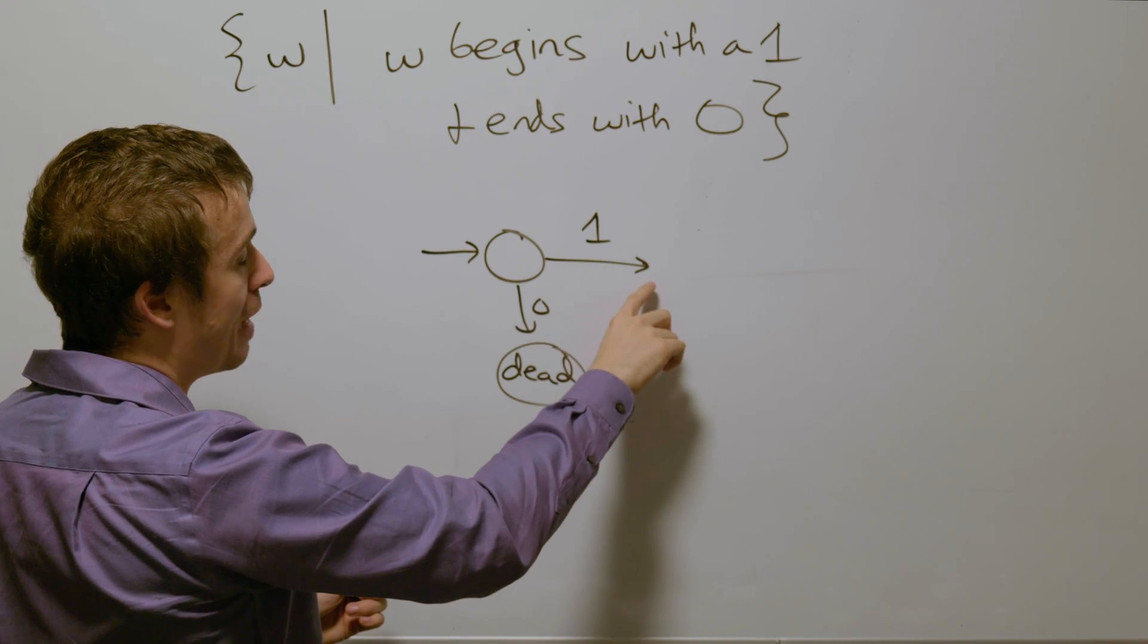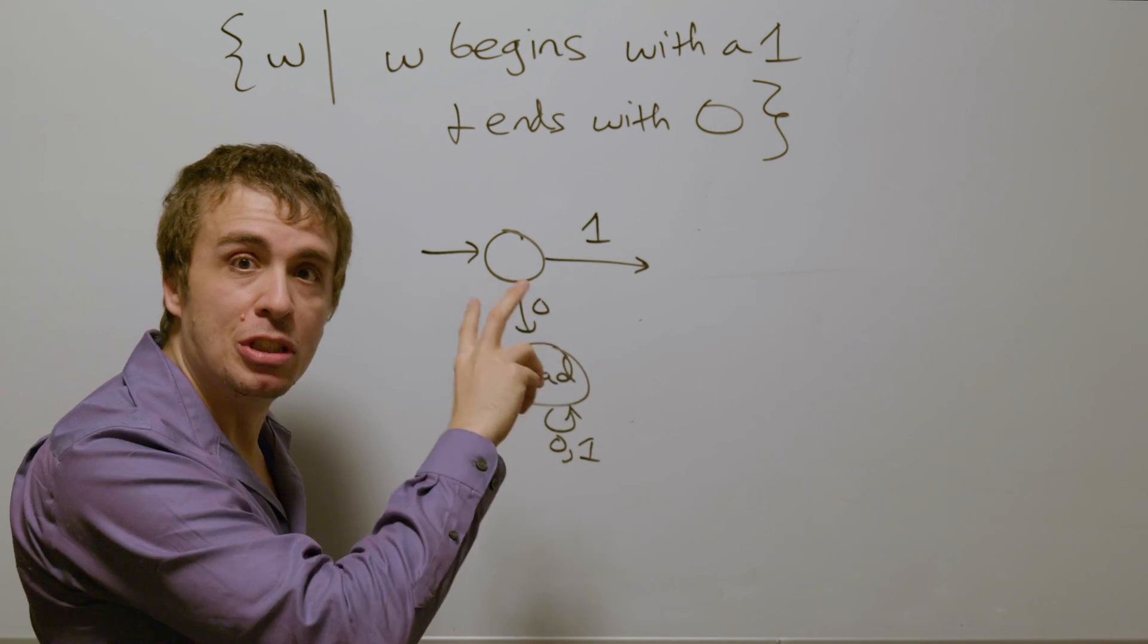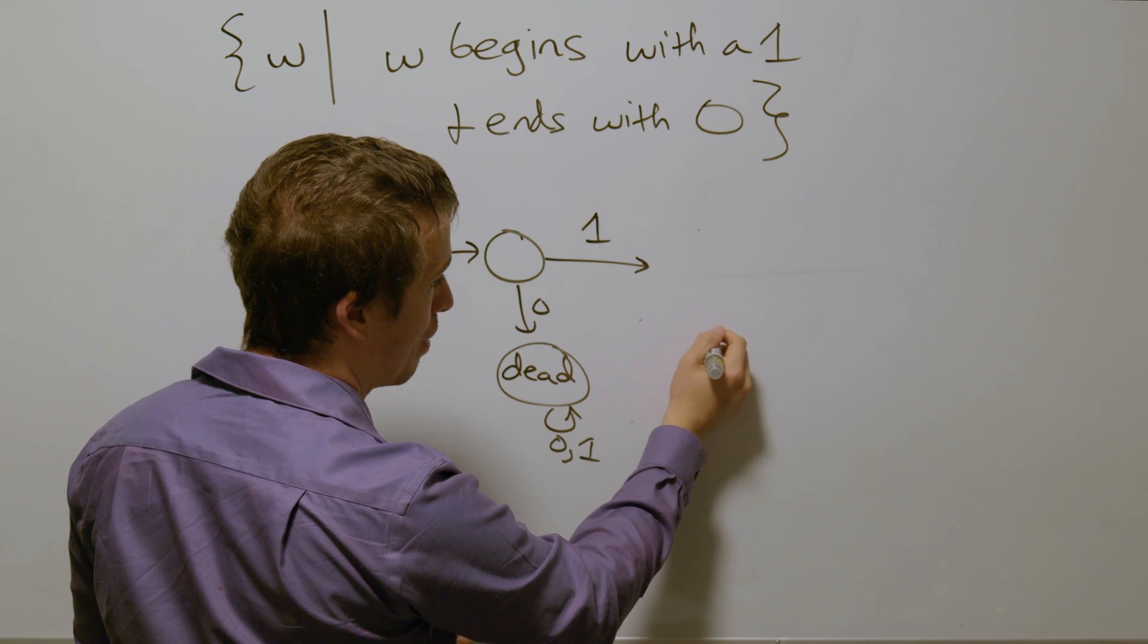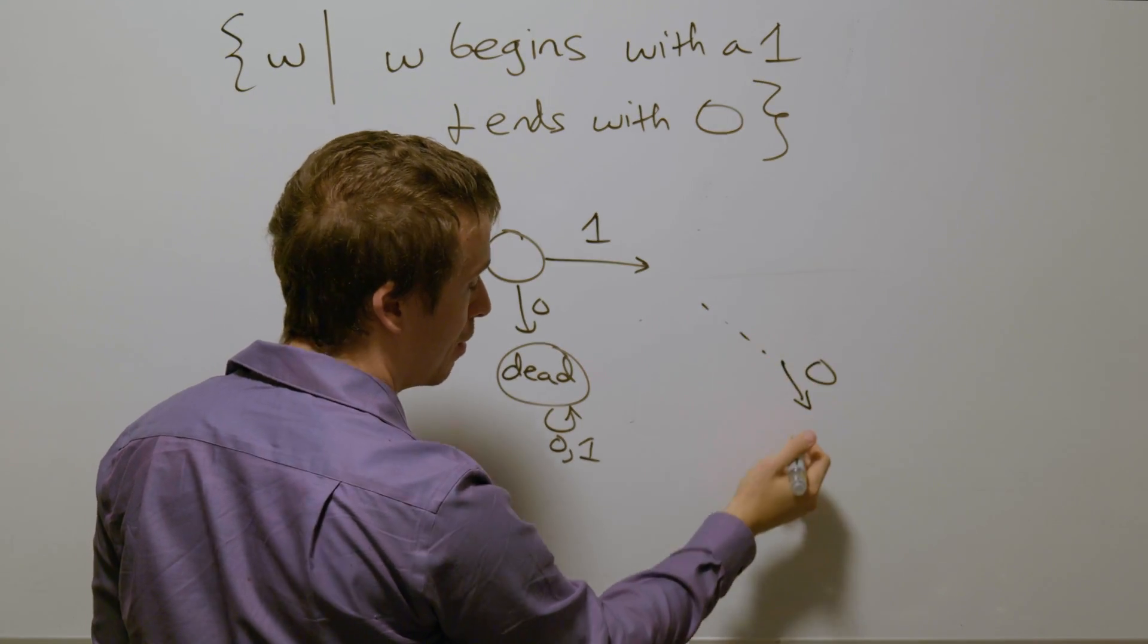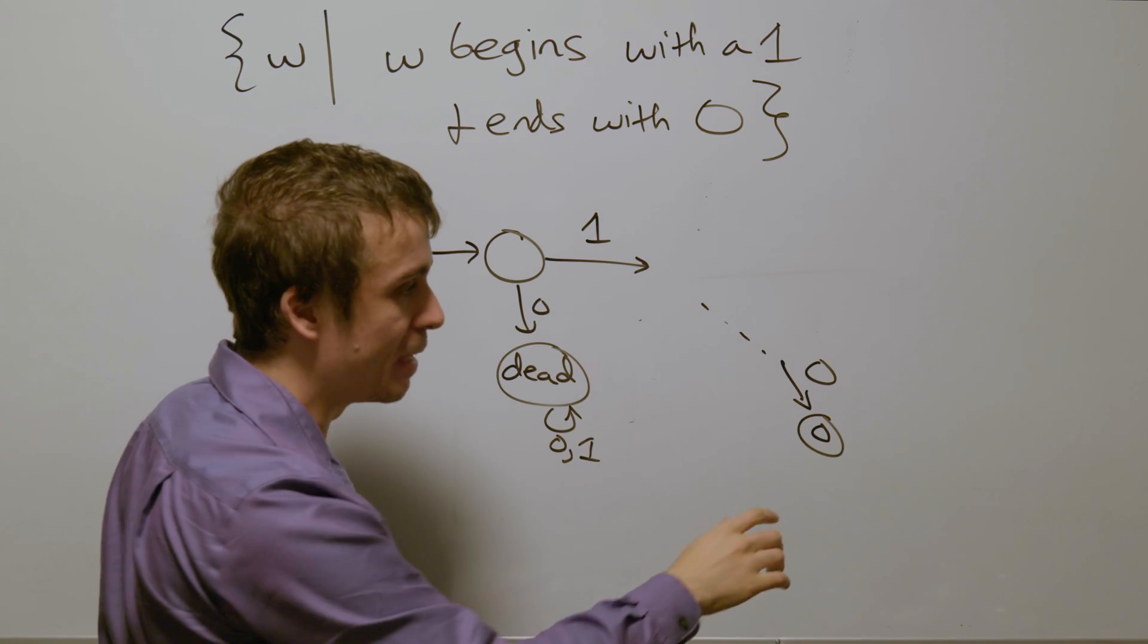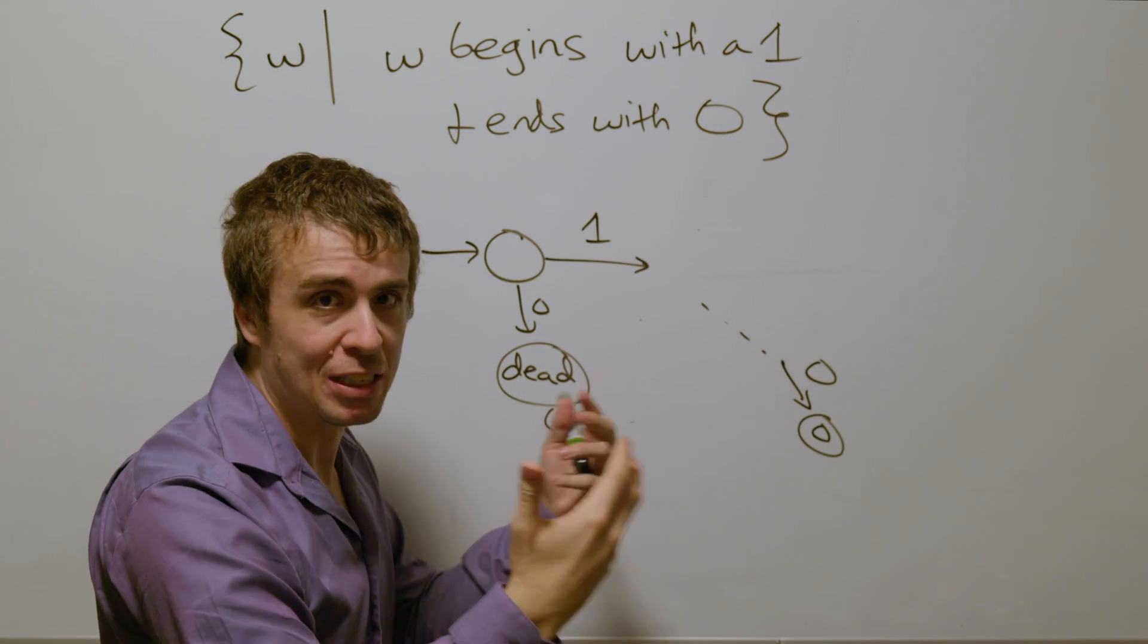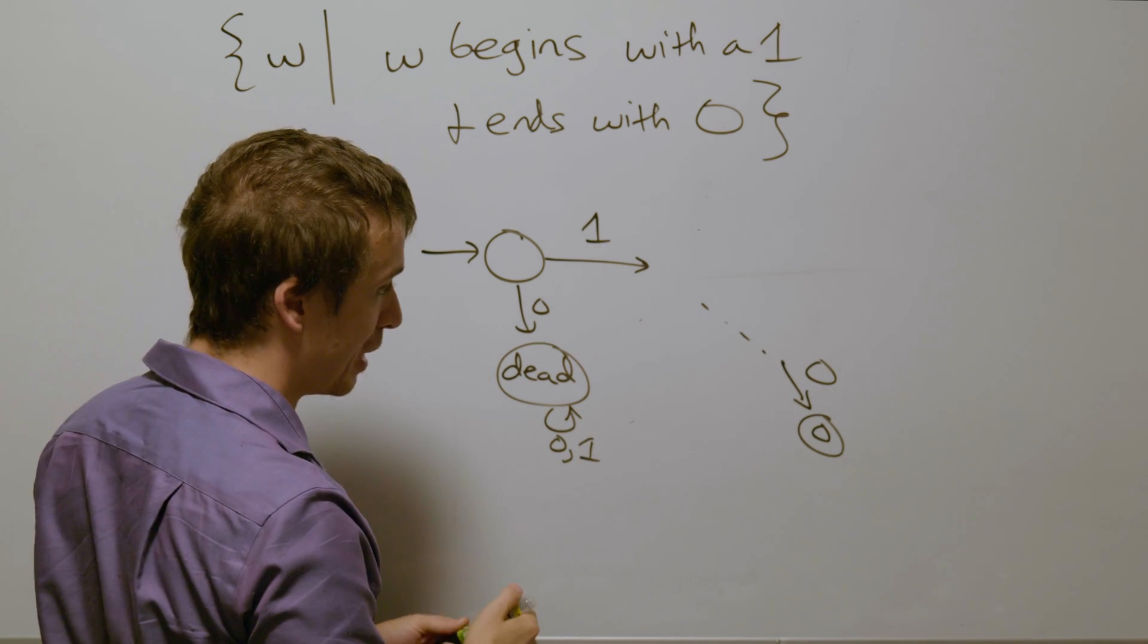So if we have a one right here which starts off the string, we need to satisfy the ends with zero part of the definition because we have an and in between. So at some point, we have to have some transition that eventually at some later time goes to some final state and has a zero. Notice that I'm not trying to depict this with a single final state with no transitions leaving it. This is just the idea that the last transition we want to be going to a final state.